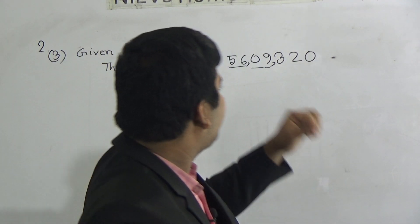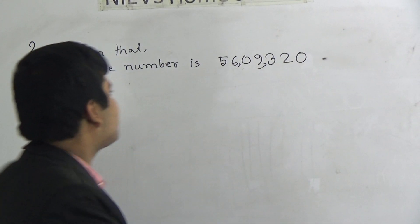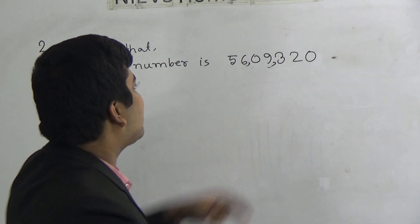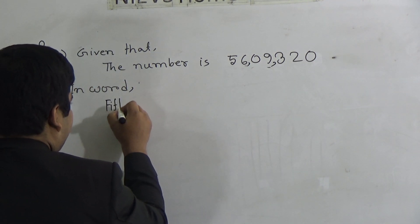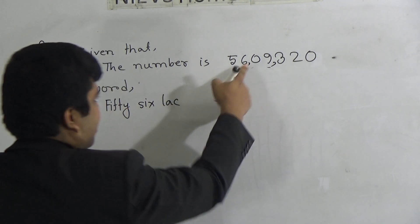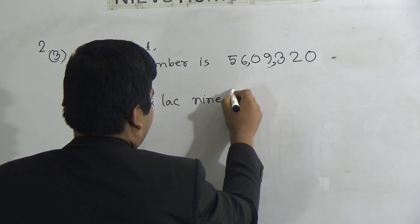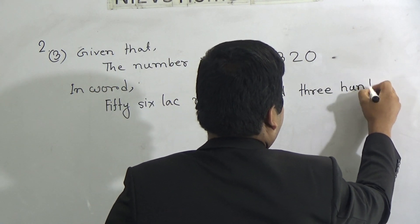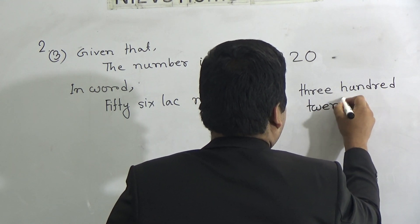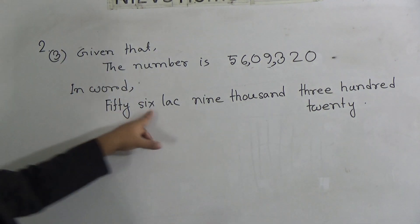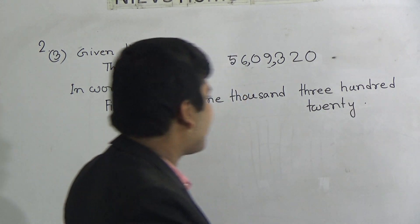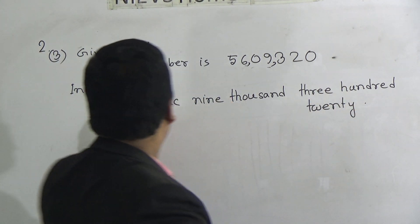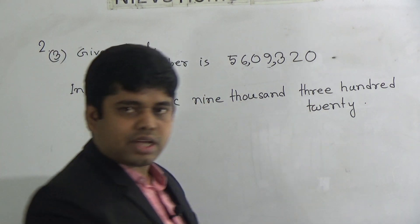I hope you have understood. Now we write this number in words. So how do we write the number in words? We write: fifty-six lakh nine thousand three hundred twenty. In order to write this, you have to learn the spelling of the relevant words: fifty-six lakh, nine thousand, three hundred, twenty. I hope you have understood.